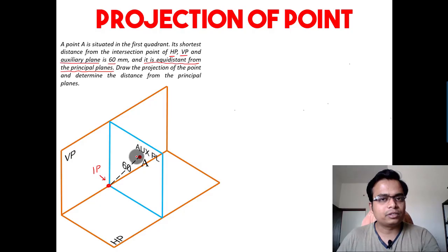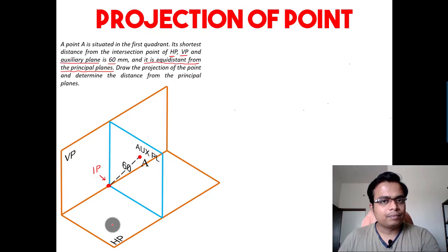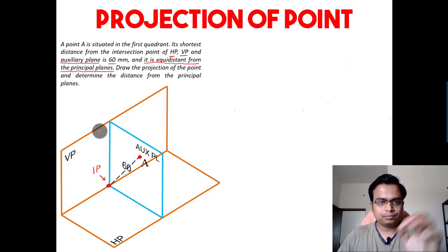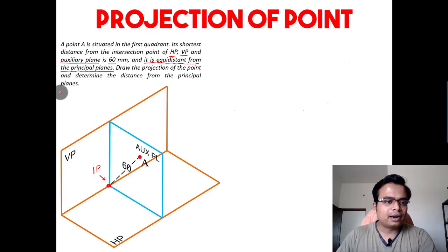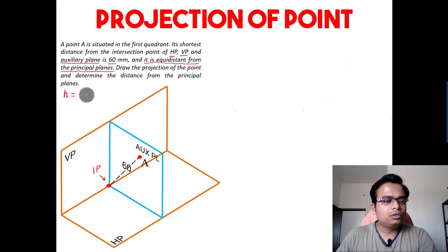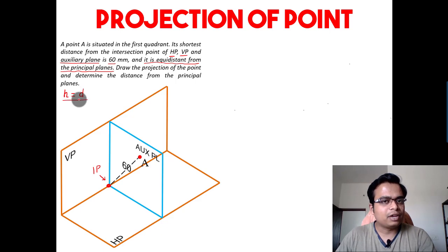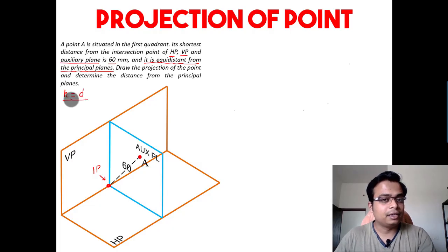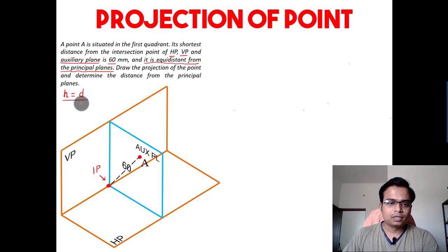The front and top views are achieved in the vertical plane and in the horizontal plane respectively. Therefore VP and HP are the principal planes. This point A has been kept such that its distance from HP — that is H — is equal to its distance from VP — that is D. So one thing is clear: H is equal to D, and we have to use this somewhere as it could be very helpful.